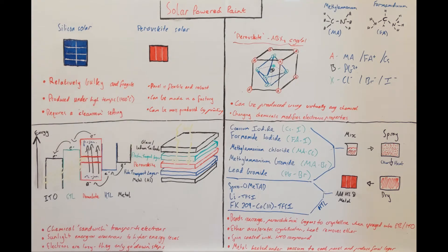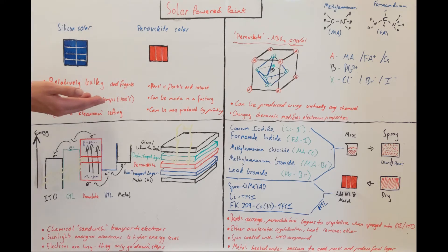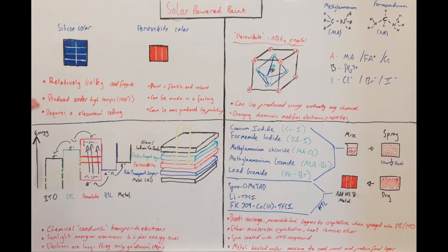On the other hand, traditional silicon solar panels are relatively bulky and fragile compared to perovskites. They're produced under very high temperatures, around 1400 degrees Celsius, and they require a clean room setting to produce, which means we have to filter dust and other contaminants out of the air in order to produce highly efficient panels.